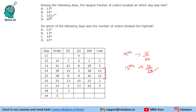On which of the following days was the number of orders booked the highest? Orders booked was highest on day 13th. That is why it was important to find the values for 12th and 13th — only then could we answer this question.